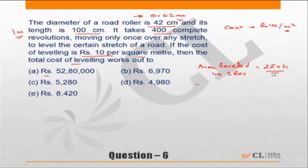In this case it is length, so 2πr times h, where h refers to the length of the road roller which is 1. But this is area leveled in one revolution. What is the total area leveled? It will be 400